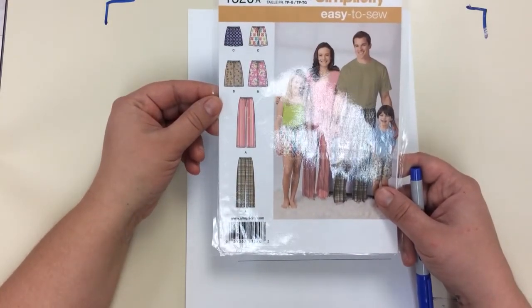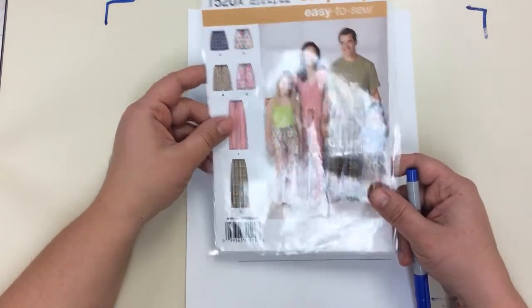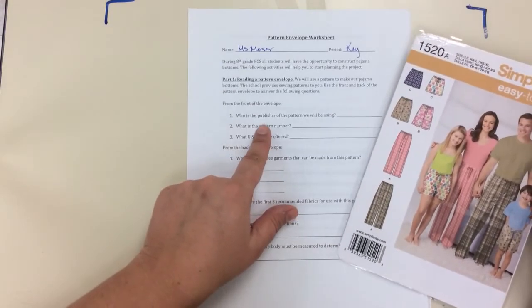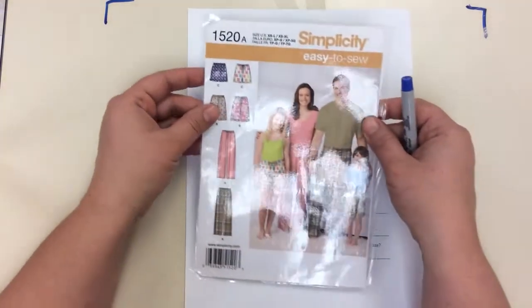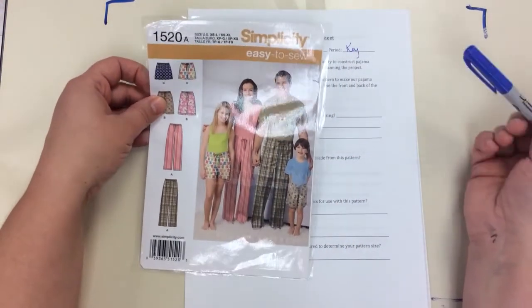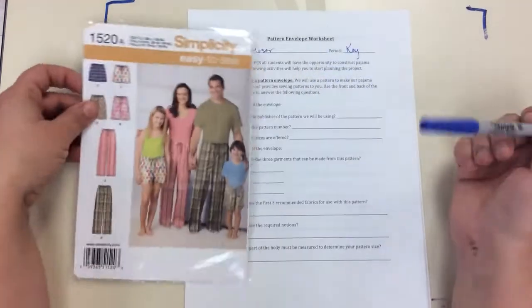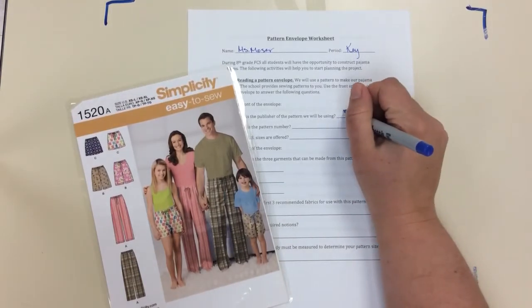Before you're able to pick your fabric and get started sewing, you need to do some work reading the actual pattern envelope itself. So that's what this worksheet covers. Number one's asking what is the publisher of the pattern that we are using. You can see the brand is pretty prominent on this envelope - it's Simplicity. So we'll go ahead and write that down.